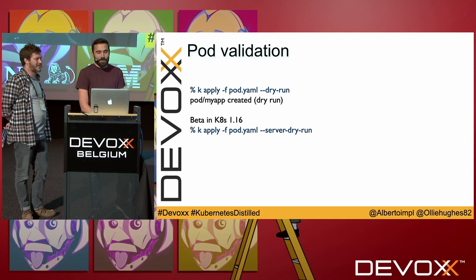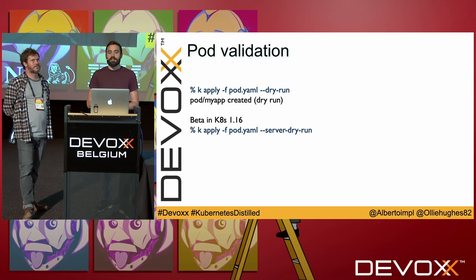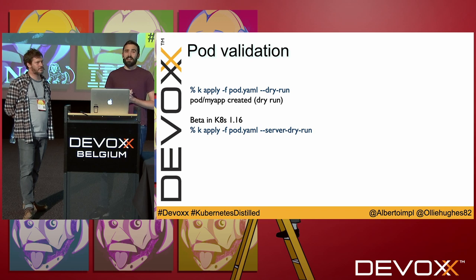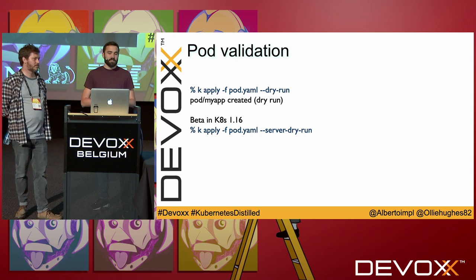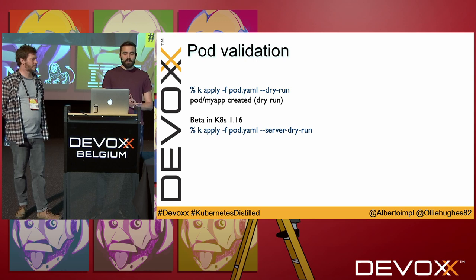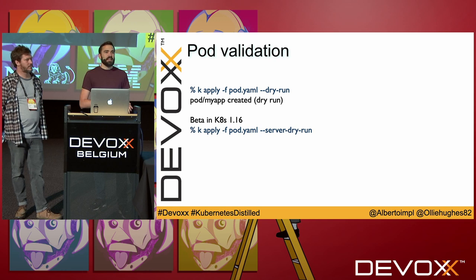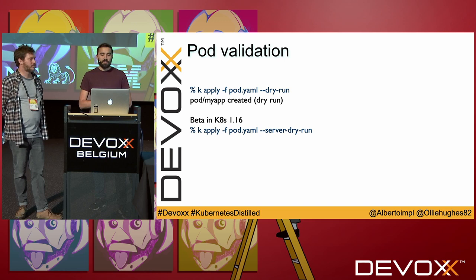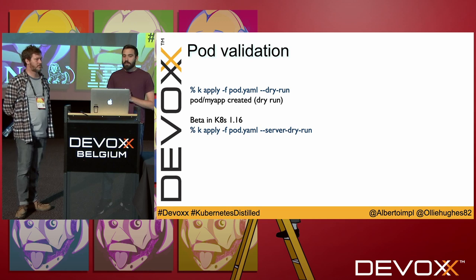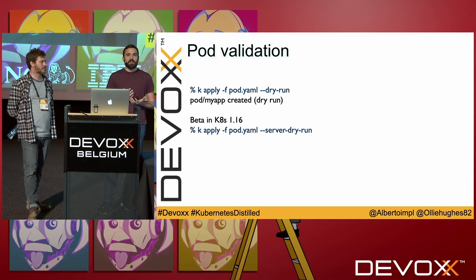We have a bunch of YAML now, and it's a good idea to validate it. There are IDE tools like the Cloud Code plugin for IntelliJ and Visual Studio Code that help a lot with writing YAML. But in the end you really want a validation step all the time, especially for CI. For validating, we can do a dry run — this does client-side validation, so if your pod depends on some API integration or permissions, that won't fail. There's a new beta command in 1.16 that gives you the ability to do server-side dry runs for actual server-side validation. Note that this is a feature gate you have to enable — it's not on by default.